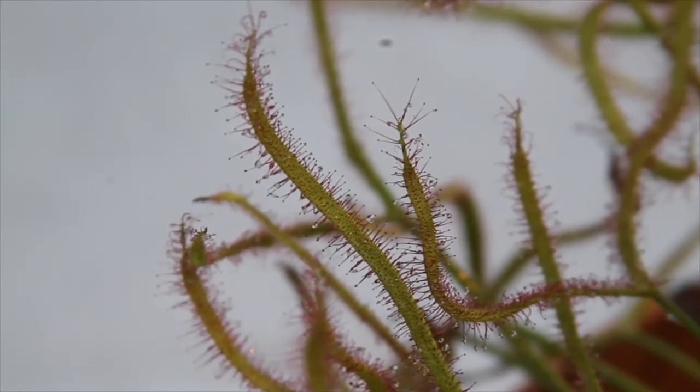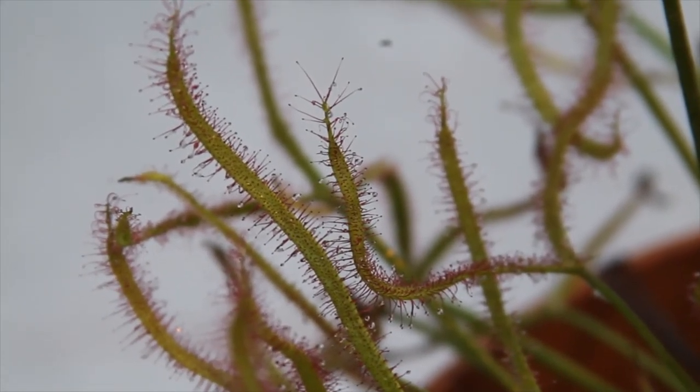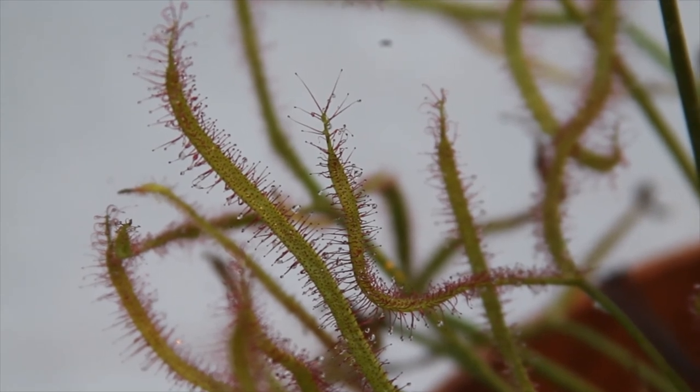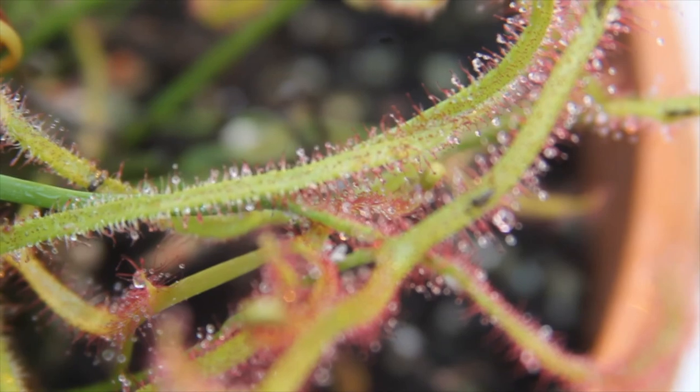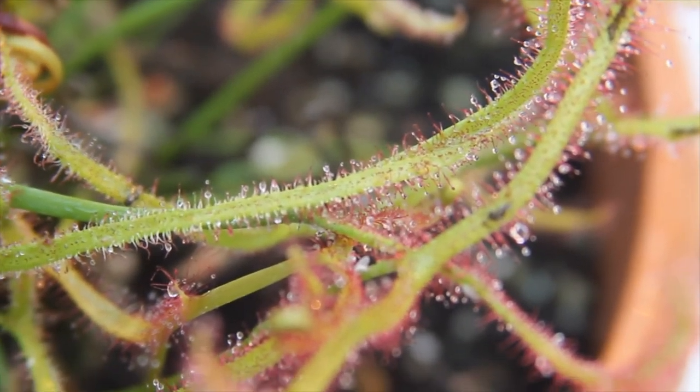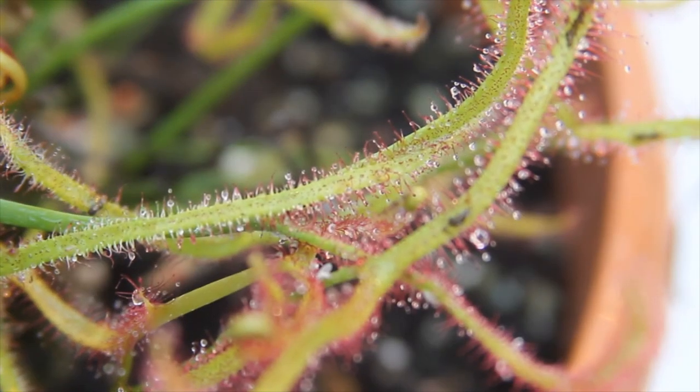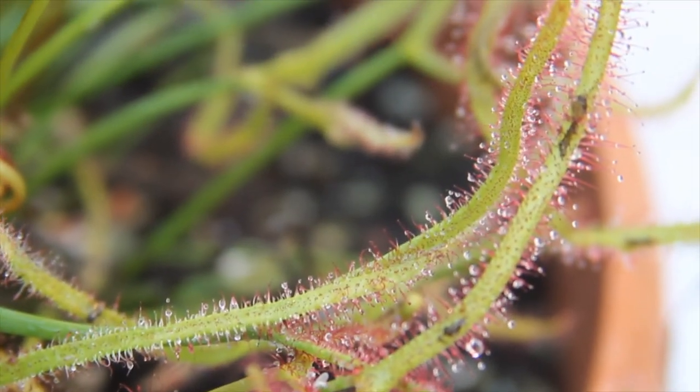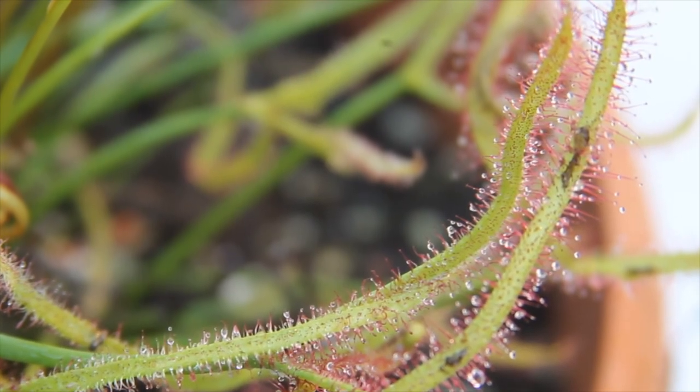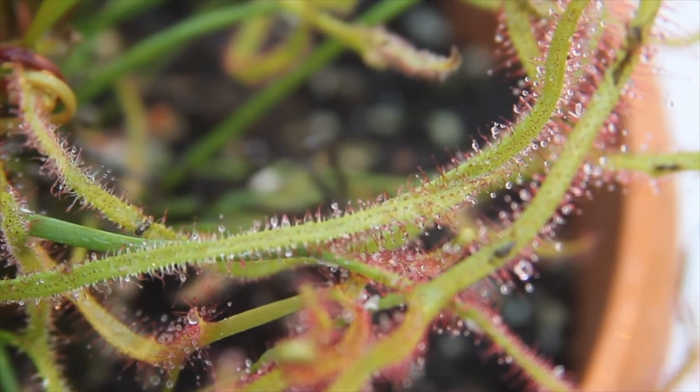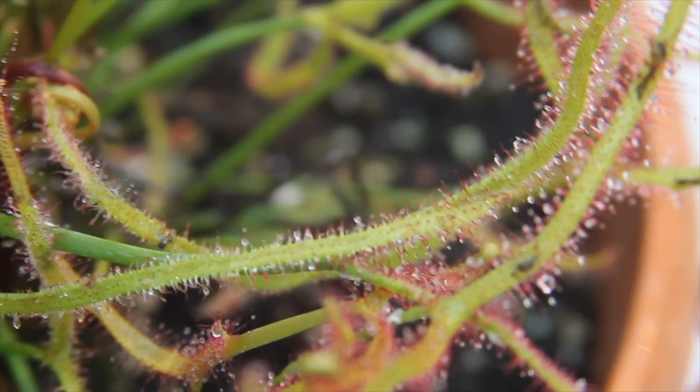And what happens is the sweet smell attracts particularly small flies and other insects. And they land on it and they get stuck on it and it will dissolve the insect that way. Here's a close-up of the leaves with the little dew drops on them. Hence the name Cape Sundew.